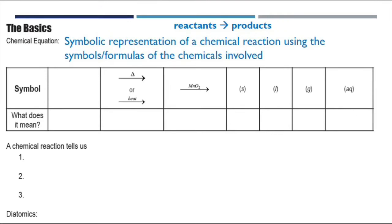Some other symbols you're going to see in chemical reactions are important, especially when writing them out. Anytime we see an arrow in a reaction, that's where the reaction is really happening. When reading word equations and translating them into chemical equations with symbols, the words we're looking for that tell us a reaction is happening are: reacts, yields, or produces. That's where the verb is — something is reacting and changing into something new.